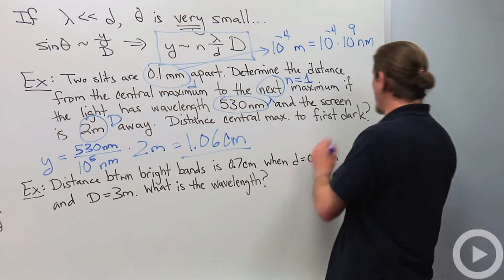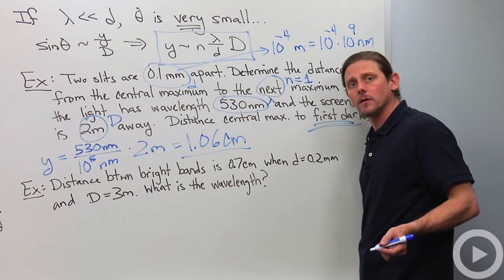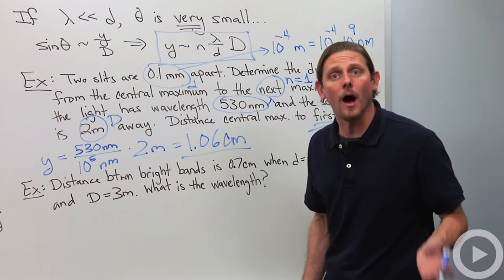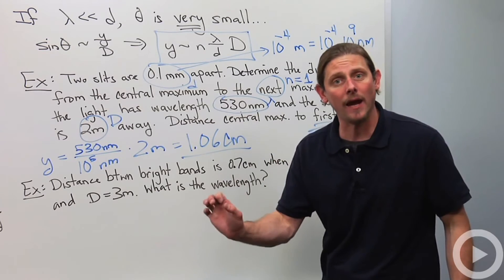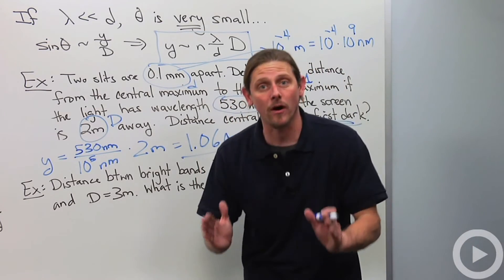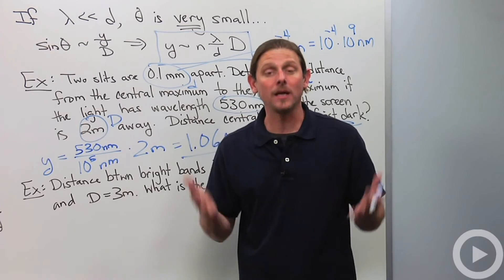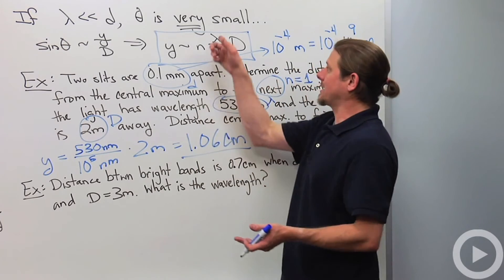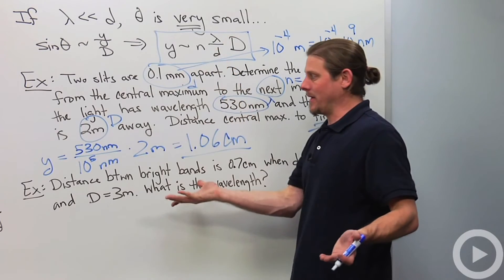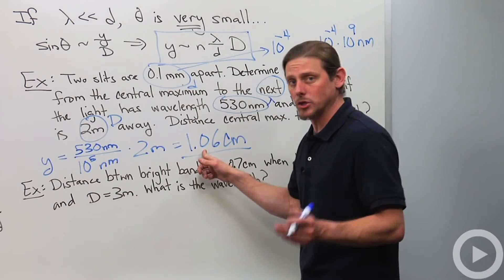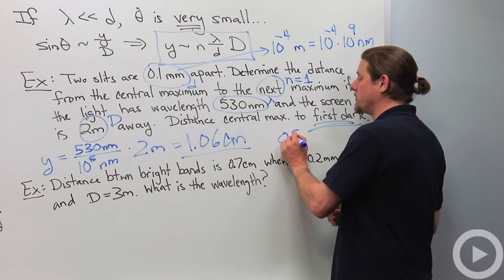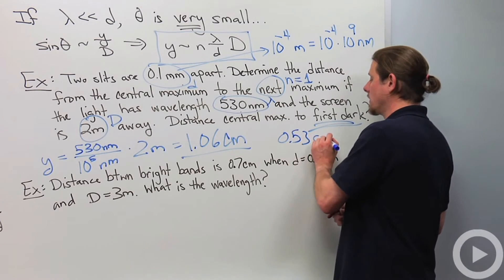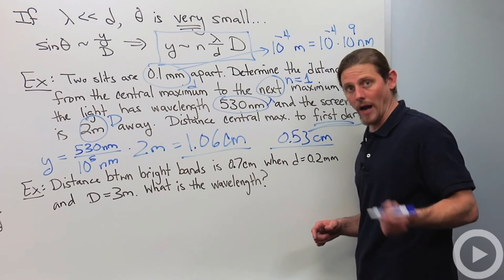What if we're looking to the first dark spot? Well, the first dark spot appears when d sine theta is equal to half of the wavelength because now we'll be destructively interfering. So if I just cut the wavelength in half, that'll give me the answer. So all I have to do is divide this by 2. So this answer will be 0.53 centimeters.